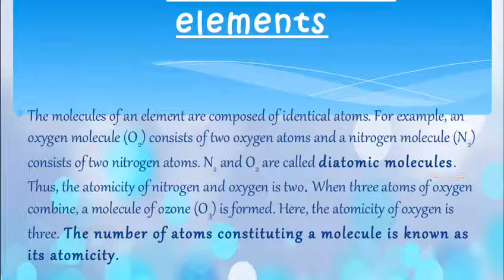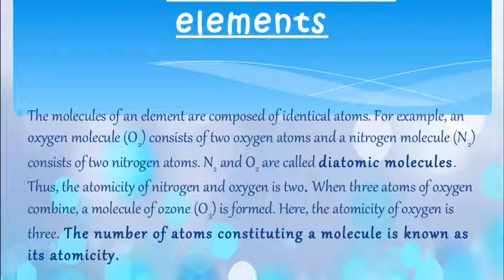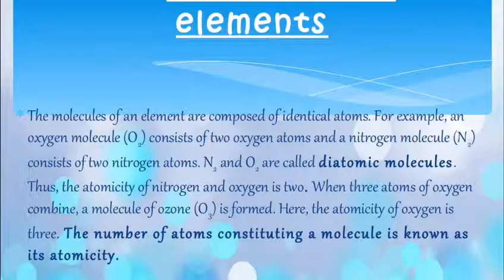O2 is called diatomic molecule. Thus, atomicity of nitrogen and oxygen is two. When three atoms of oxygen combine, then it is O3. Here the atomicity of oxygen is three. So what is atomicity? The number of atoms constituting a molecule is known as its atomicity.